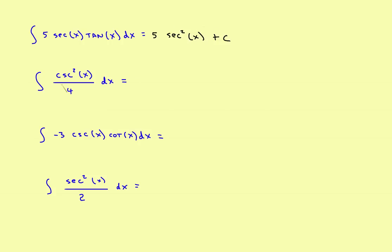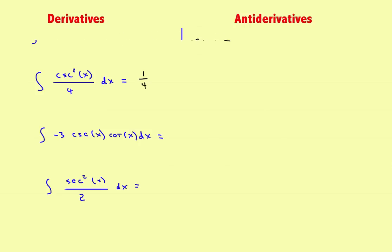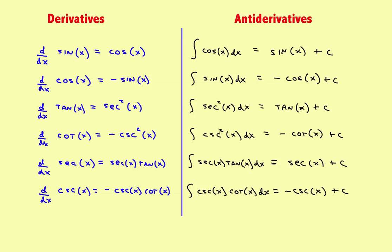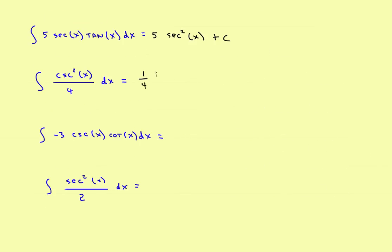For this one, think of dividing by 4 as multiplying by one-fourth. So you have one-fourth of — now you need the antiderivative of cosecant squared, which is negative cotangent. So this becomes one-fourth times negative cotangent of x plus c. Moving the negative out front: negative one-fourth cotangent of x plus c.